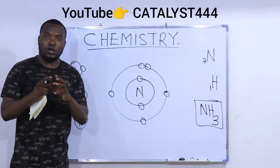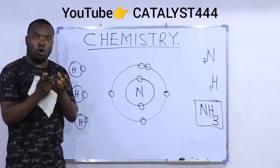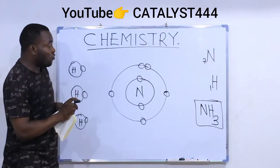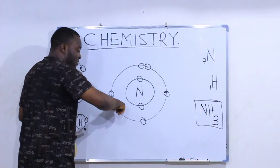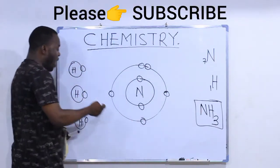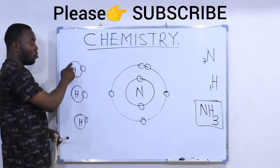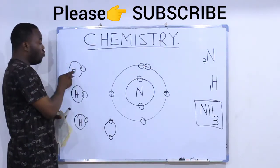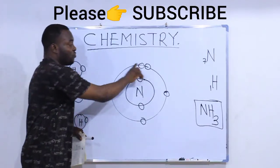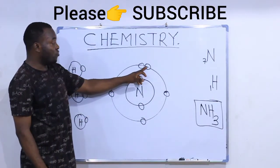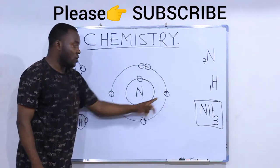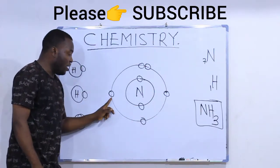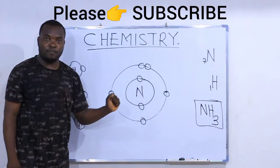The essence of chemical bonding is for atoms to attain what we call the octet state. This nitrogen atom would like to have eight electrons at its valence shell, while hydrogen would like to have two electrons, because hydrogen has only the first shell, which carries only two electrons. Nitrogen currently has five valence electrons, so it needs three more to attain the octet state — one here, one here, and one here.